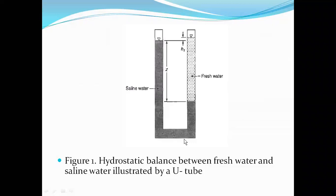This illustrates the balance between fresh water and saline water in a hydrostatic balance. The dark black color refers to the saline water and the lighter line refers to the fresh water. The interface between fresh and saline water is below sea level. HF refers to the elevation of the water table above sea level.